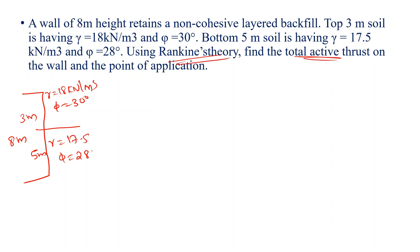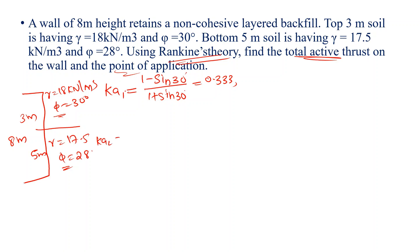Find the lateral earth pressure and its point of application. The first step is to calculate the coefficient of lateral pressure. Ka1 is equal to 0.33. Ka2 is equal to 1 minus sin 28 by 1 plus sin 28, so Ka2 is equal to 0.361.